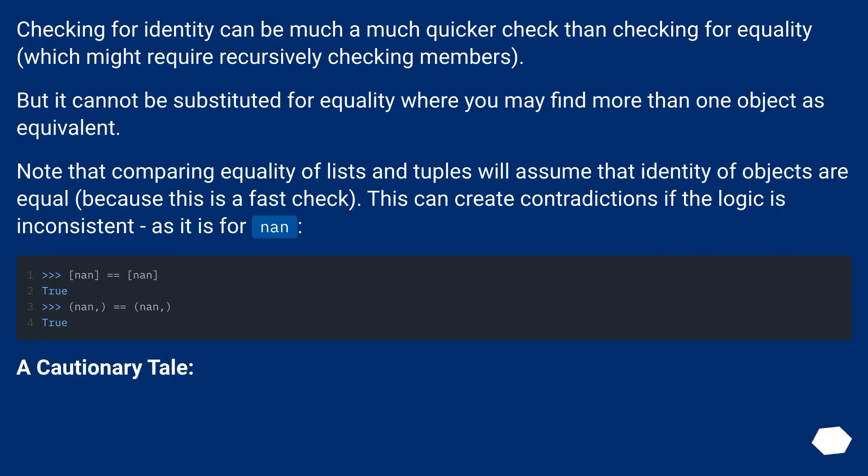Checking for identity can be a much quicker check than checking for equality, which might require recursively checking members. But it cannot be substituted for equality, where you may find more than one object as equivalent. Note that comparing equality of lists and tuples will assume that identity of objects are equal because this is a fast check. This can create contradictions if the logic is inconsistent, as it is for NaN.